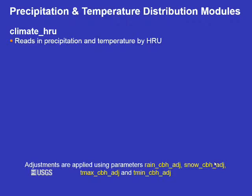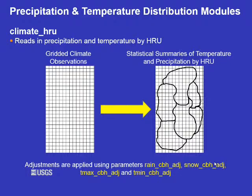climate_HRU is probably the easiest of all of these distribution modules to use. It reads in the precipitation and the temperature by HRU. There are many gridded climate data sets that can be summarized by HRU. The adjustment parameters can be used to further adjust the climate values defined by HRU within PRMS.